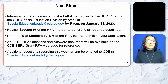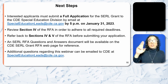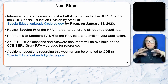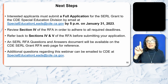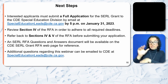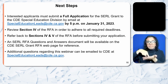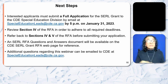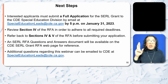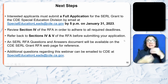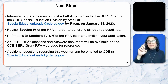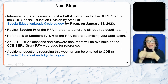Next Steps: Interested applicants must submit a full application for the SERL grant to the CDE Special Education Division by email at specialeducationleads@cde.ca.gov by 5 p.m. on January 31, 2023. Review Section 4 of the RFA in order to adhere to all required deadlines, and refer back to Sections 4 and 5 of the RFA before submitting your application. Any SERL RFA questions and answers documents will be available on the CDE SERL grant RFA webpage. Additional questions can be emailed to CDE at specialeducationleads@cde.ca.gov.